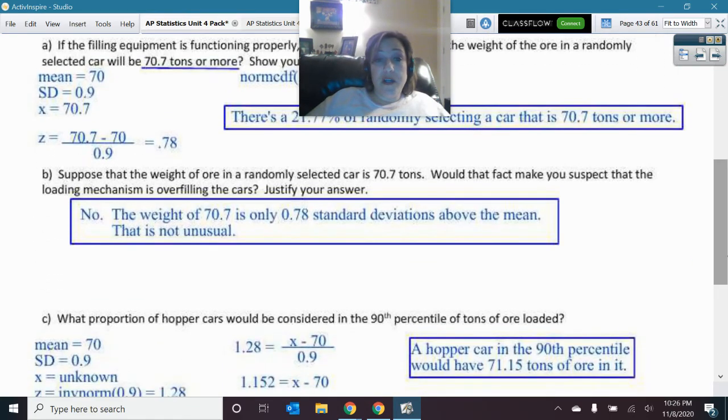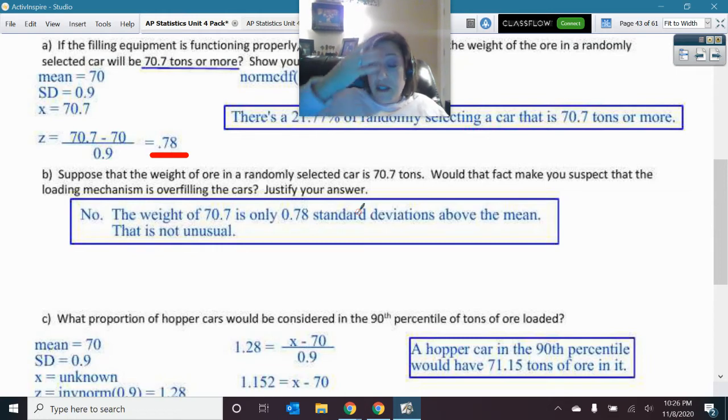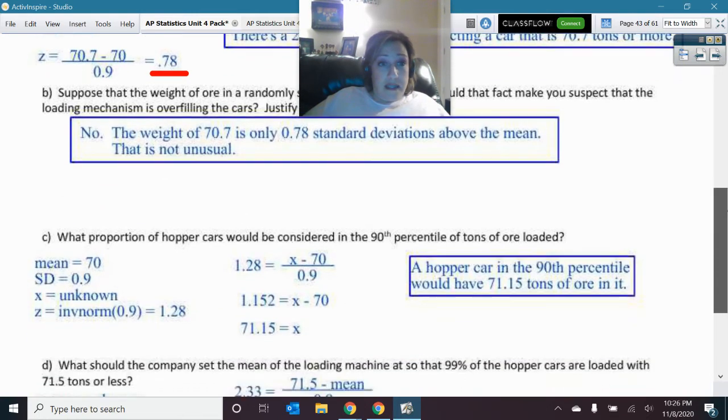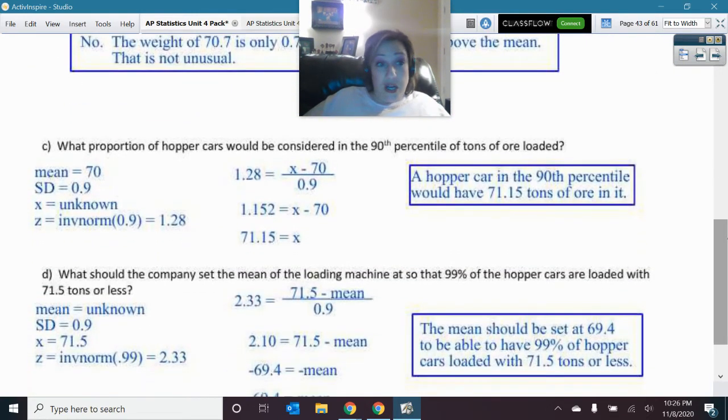Here, we were wondering, was that 70.7 unusual? Would that make you think that the machine is overfilling the cars? And that's no, because that had a standard deviation. That Z score was just 0.78. So, that was not even one whole standard deviation above the mean. That's not unusual at all. That's just sampling variability right there. So, I am not worried at all about that machine overfilling.